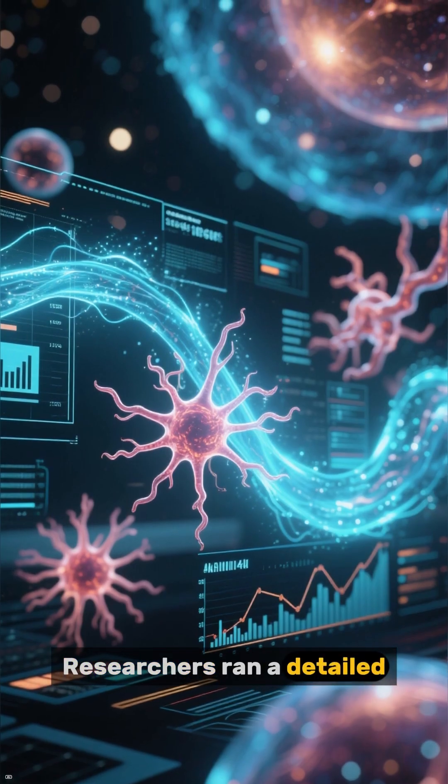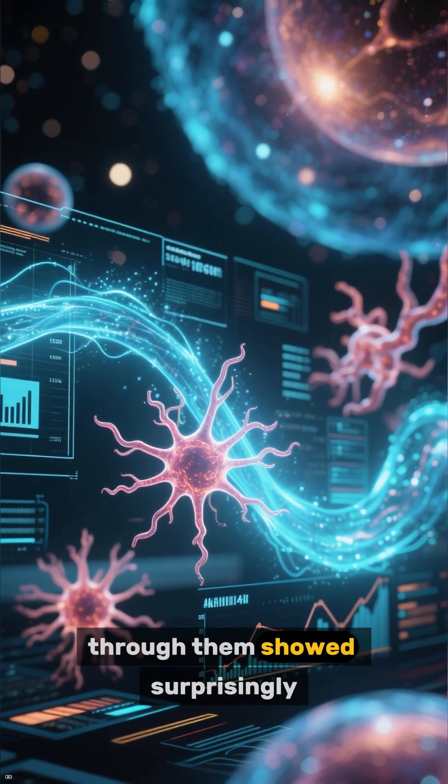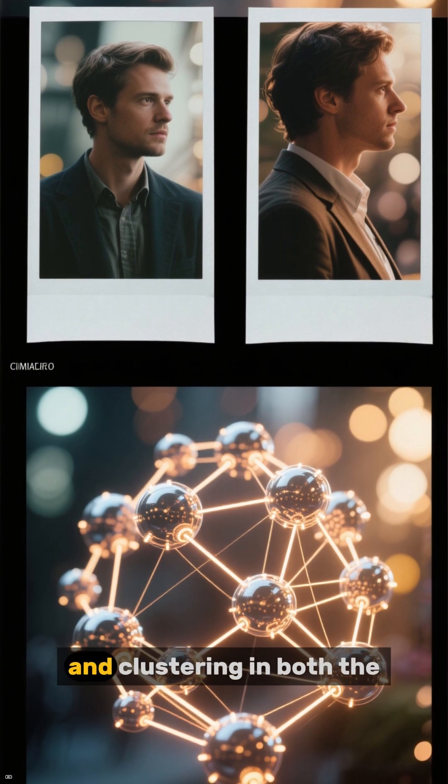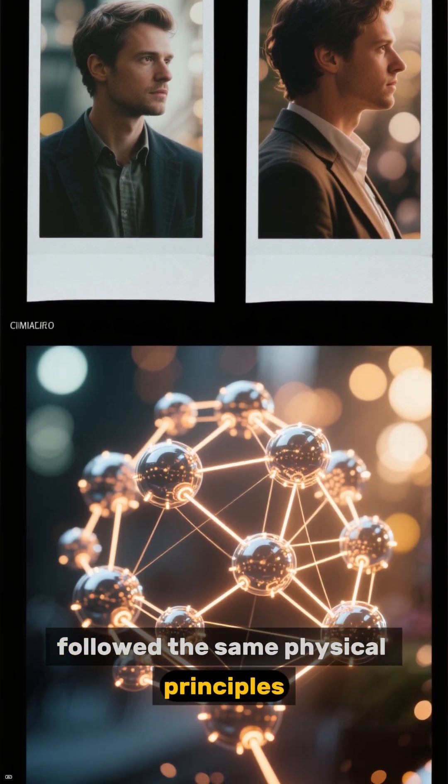Researchers ran a detailed analysis on both networks, and the way information or matter flows through them showed surprisingly similar patterns. The degree of connectivity and clustering in both the brain and the cosmic web followed the same physical principles.